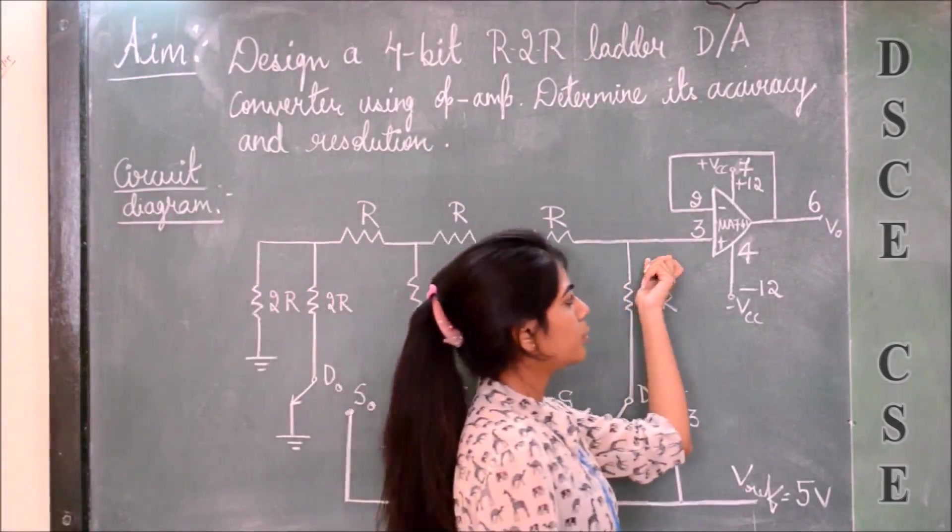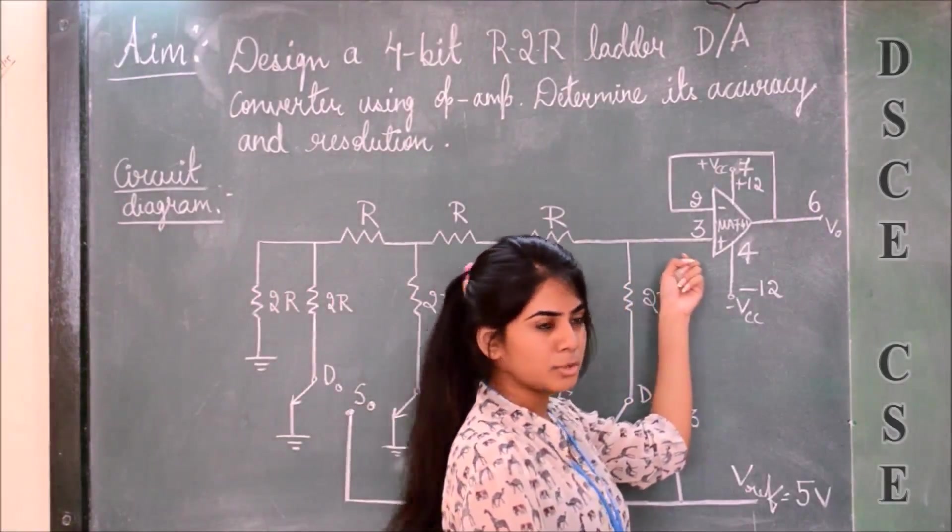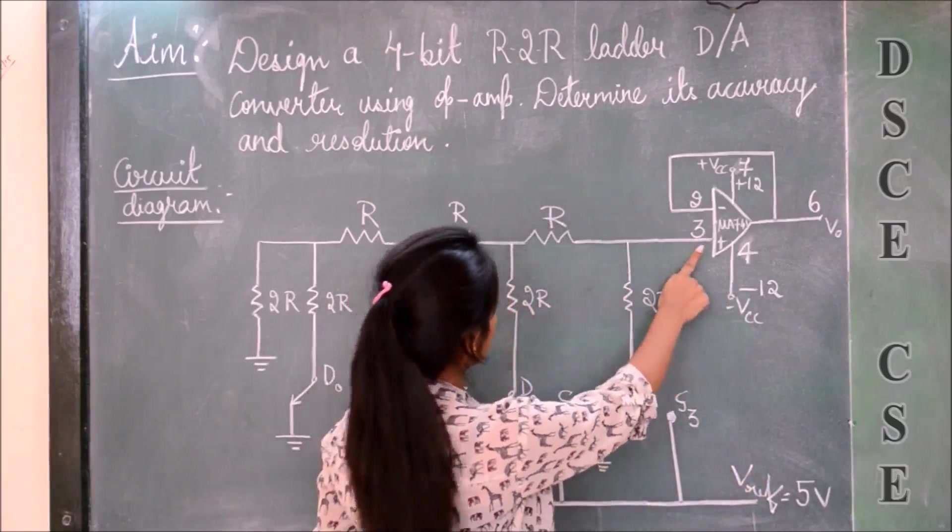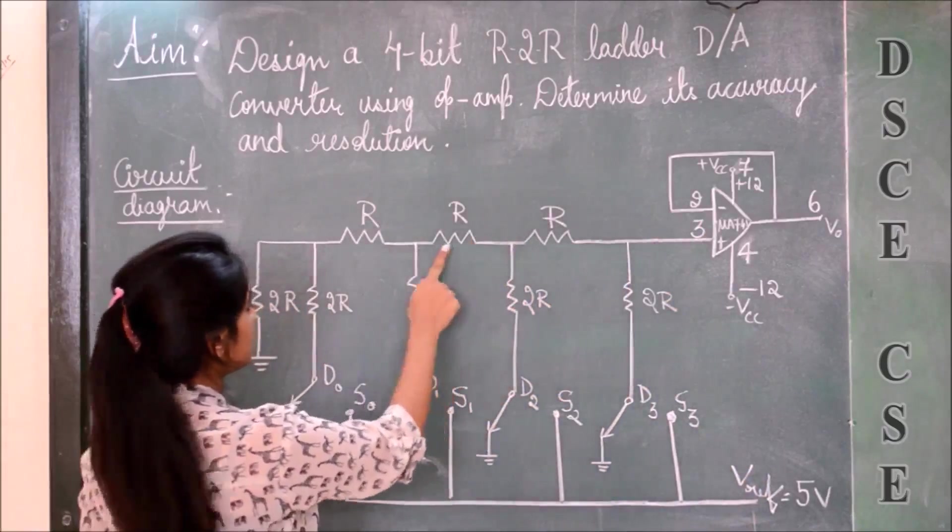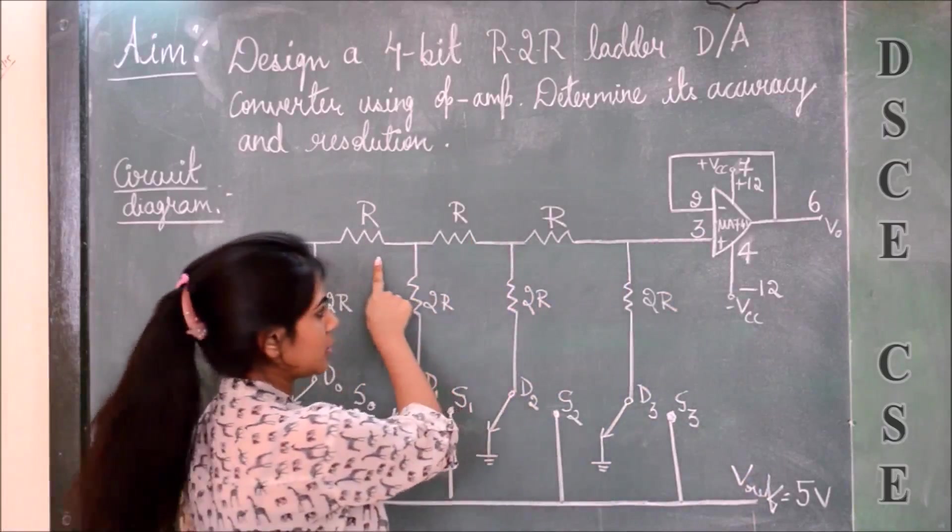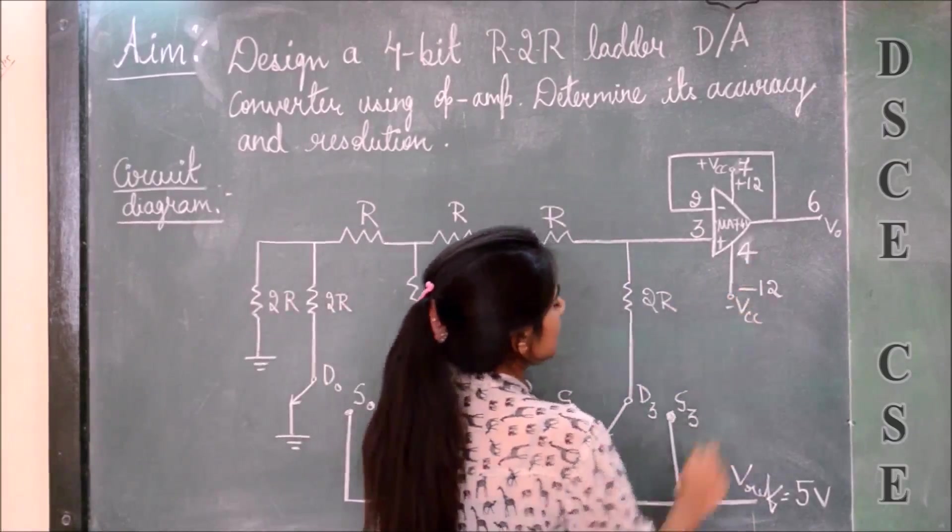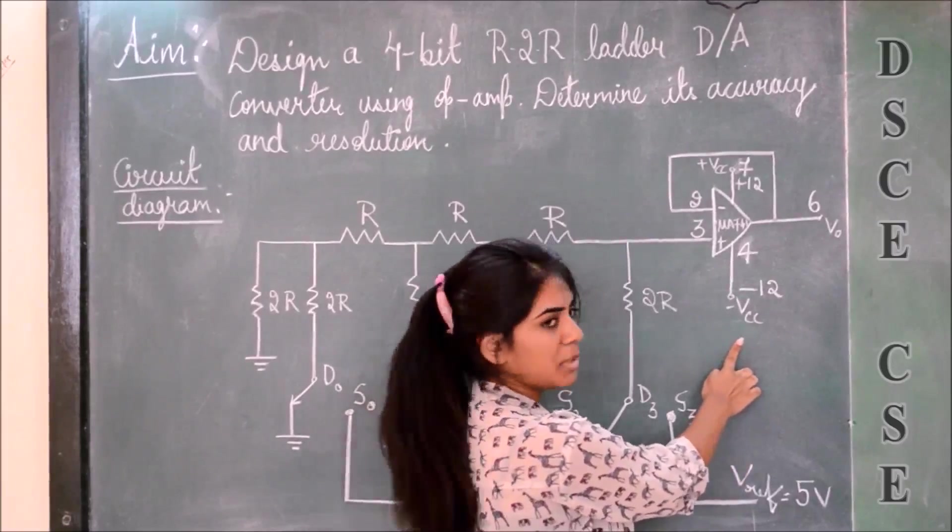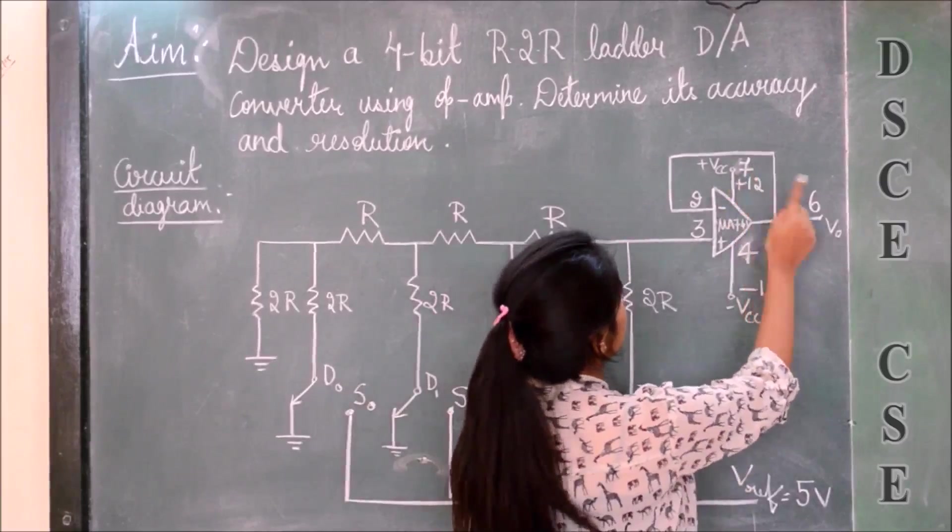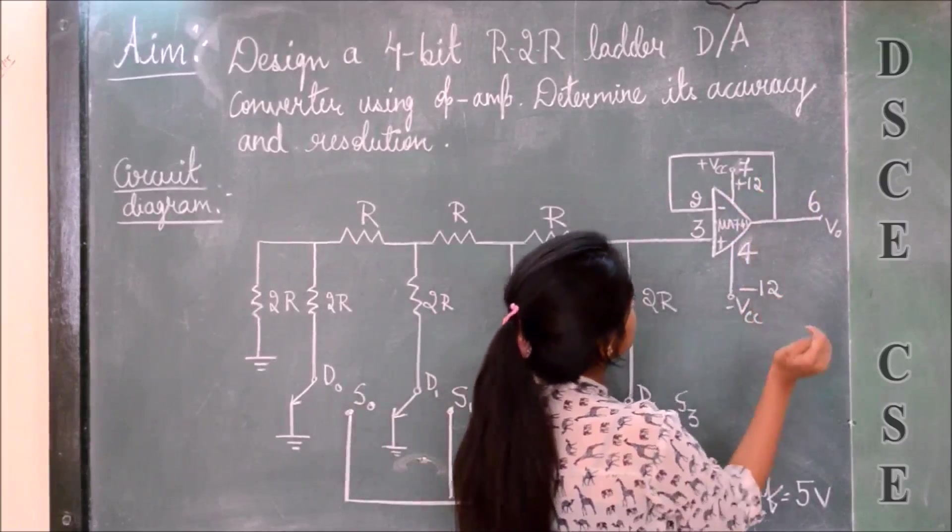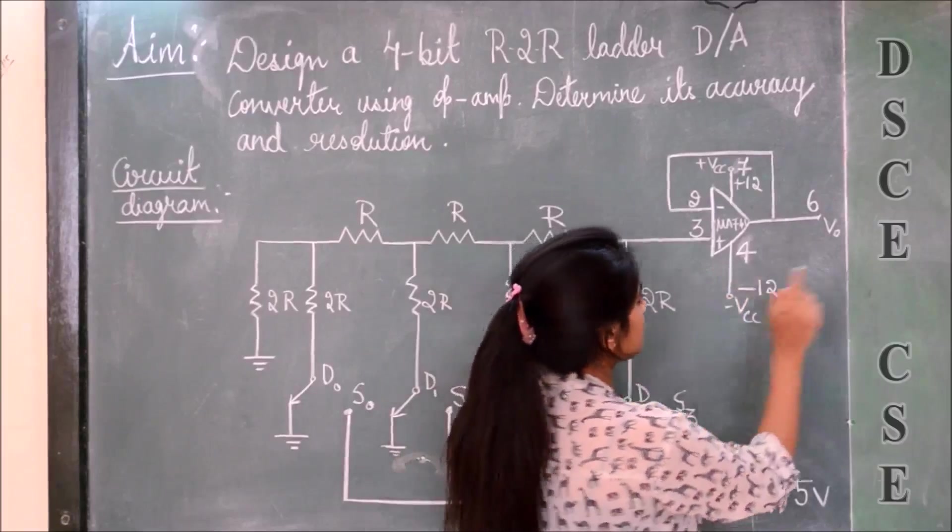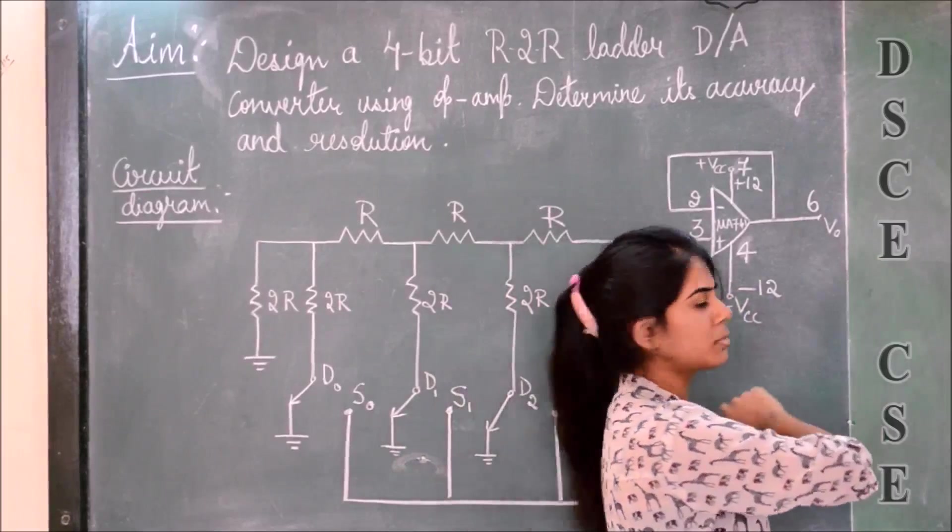This is the MU741 op-amp that we are going to use for the R-2R ladder. Pin 3 is connected to three 1 kilohm resistors, and pin 4 is connected to the minus 12 volt of the power regulator supply. Pin 7 of the op-amp is connected to the plus 12 volts of the VCC, and pin 2 is connected to the output.